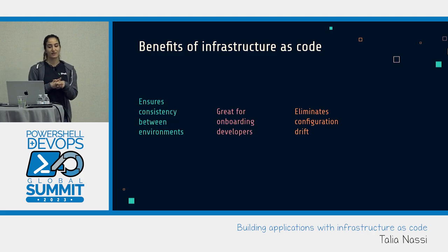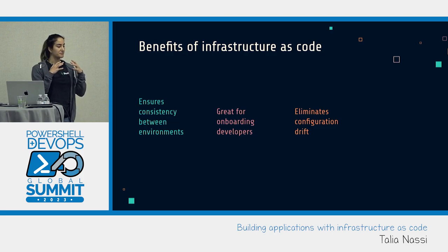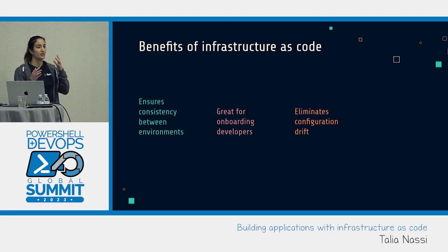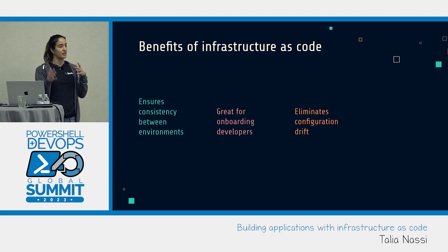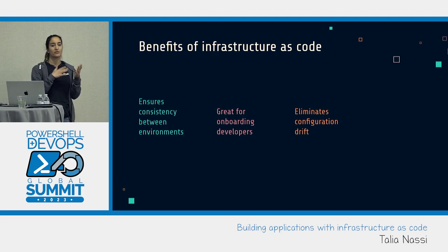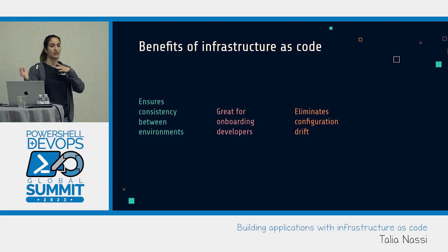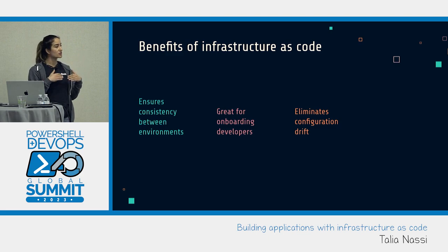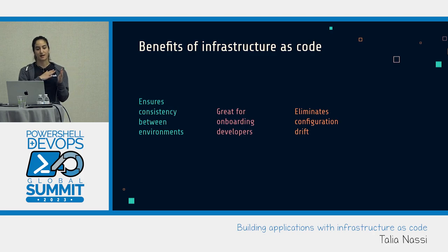Another benefit of infrastructure as code is that it eliminates configuration drift. Configuration drift happens when there are changes during incident management — you have differences between your staging, pre-prod, and production environments. If there was an incident requiring a configuration change for one environment, it causes drift between those environments, because you often don't make the same changes across production and staging. With one source of truth — one configuration file — you can deploy to staging, pre-prod, and all your other environments.